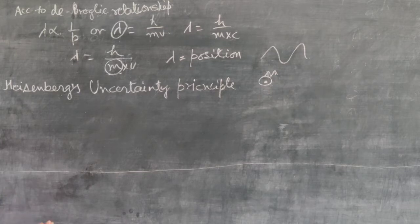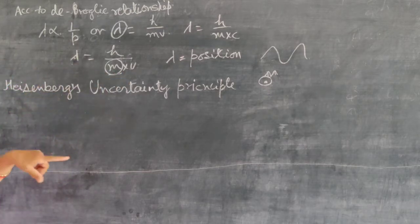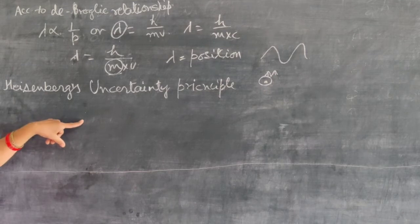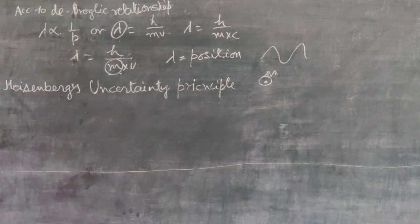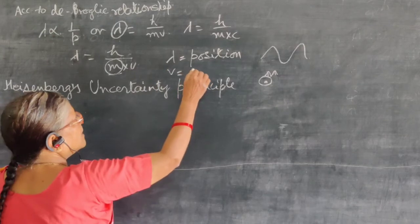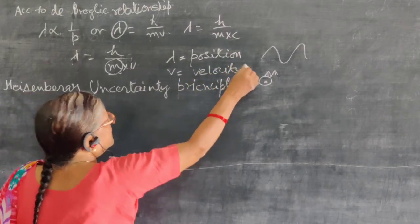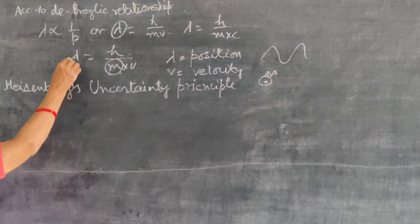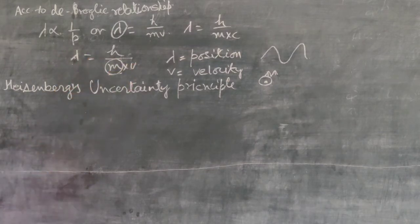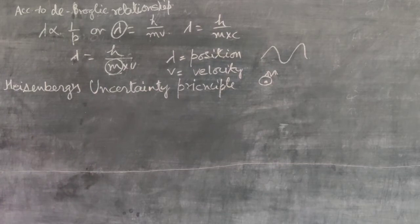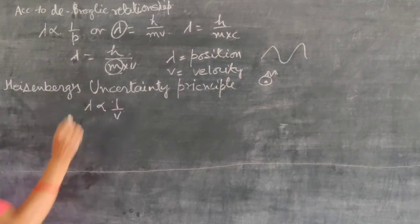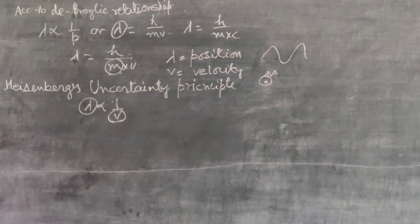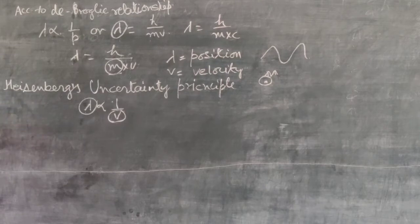Matter waves have velocity always less than electromagnetic radiation. The uncertainty principle applies to particles which have very small mass. For these particles, lambda is significant and lambda shows the position, while v shows the velocity. For subatomic particles like the electron, proton, and hydrogen atom, their mass is very small, so their wavelength is significant. Wavelength shows the position, and because mass is constant, lambda is inversely proportional to velocity. So the two properties are lambda and velocity.